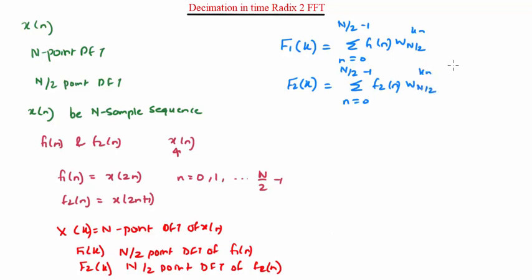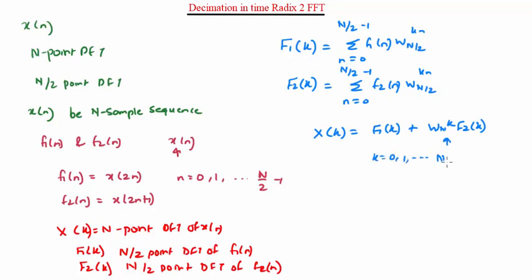The N-point DFT X(k) in terms of N/2-point DFTs F1(k) and F2(k) is given by: X(k) = F1(k) + W_N^k * F2(k). This formula is very important, where k ranges from 0 to N minus 1. Let us prove this.